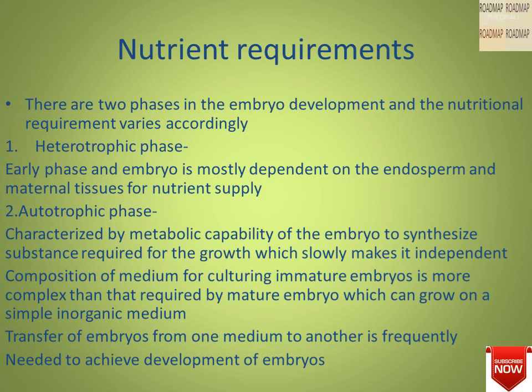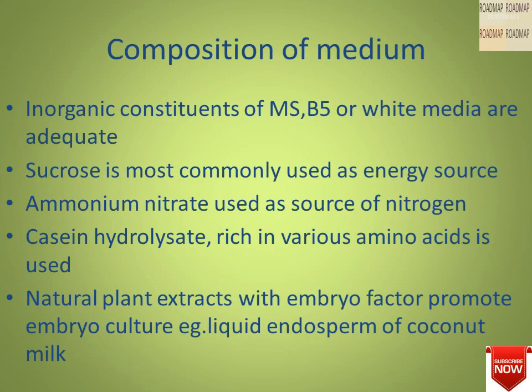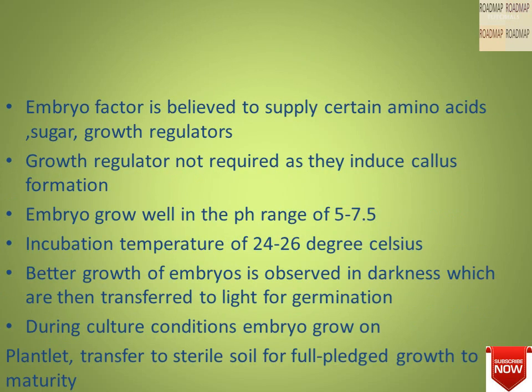Composition of the medium is another essential factor for embryo culture. The inorganic constituents of MS, White, or B5 media are adequate, and sucrose is mostly used as the energy source. Ammonium nitrate is used as a source of nitrogen. Casein hydrolysate, which is rich in various amino acids, is also commonly used. Natural plant extracts with embryo factor promote embryo culture — for example, the liquid endosperm of coconut milk. The embryo factor is believed to supply certain amino acids, sugars, and growth regulators.